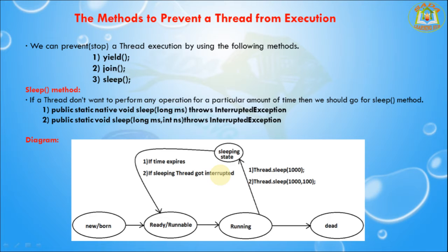Yield throws exceptions, but sleep and join do not throw exceptions. Yield is a native method; join is not a native method; sleep is a native method. Sleep takes arguments in long milliseconds, and also takes a long and integer argument.